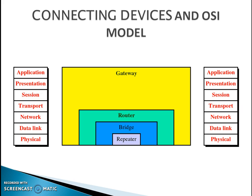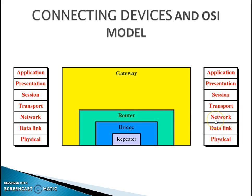Now let's establish the relationship between these connecting devices and the OSI model. A repeater is a device present at the physical layer. A bridge is a device functional at the data link layer. A router is functional at the network layer. Whereas a gateway is a device functional at all seven layers of the OSI model.